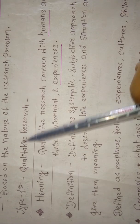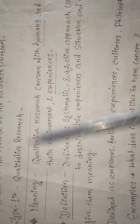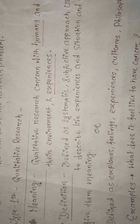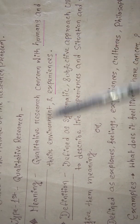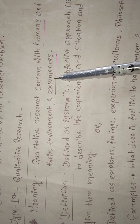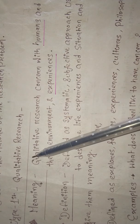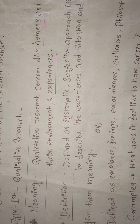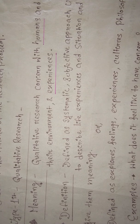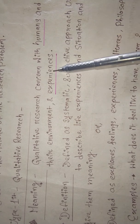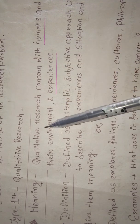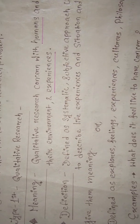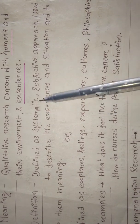Now let's see the first type, which is qualitative research. Qualitative research concerns human beings and their environment and experiences. You will remember: qualitative means human experiences. It is concerned with humans and their environment and experiences. Let's study the definition.